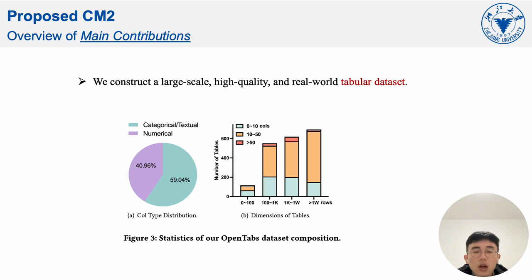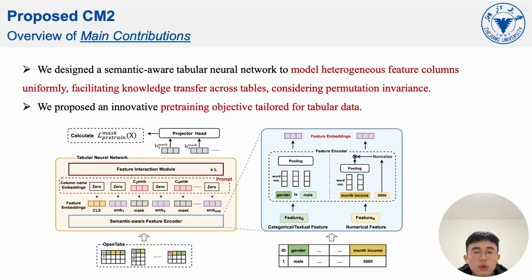So, in this work, we aim to further drive the development of tabular data pretraining, particularly through cross-table learning. As a pioneering effort, firstly, we construct a large-scale, high-quality and real-world tabular dataset. We then propose an innovative, generic and efficient cross-table pretraining framework, which includes a semantic-aware tabular neural network that uniformly encodes heterogeneous tabular data, and a pretraining objective tailored to learning potential relationships between rich columns in tabular data.